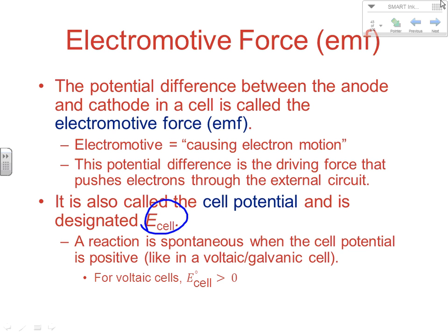A reaction is spontaneous when the cell potential ends up being positive. That's always going to happen when you have a voltaic or galvanic cell, so the E° cell is always going to be greater than zero. If you do a calculation, you know it's a voltaic cell, and you get a negative value, you know you did something wrong. If the cell potential ends up positive, the reaction is spontaneous; if it's negative, it's non-spontaneous.